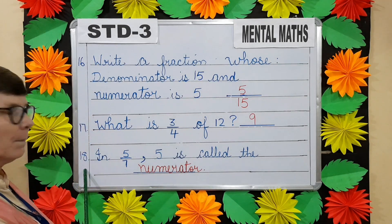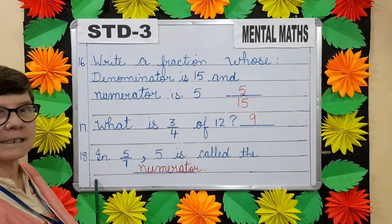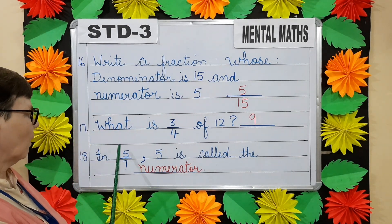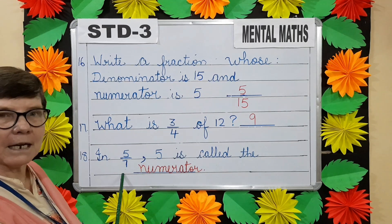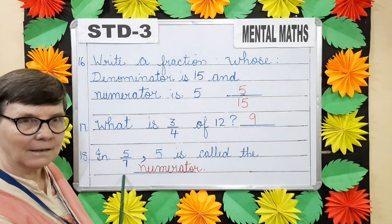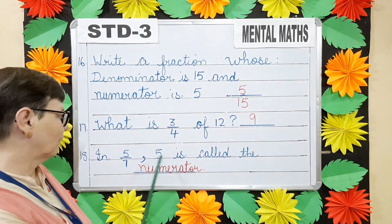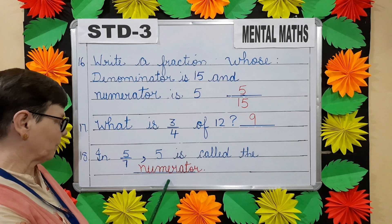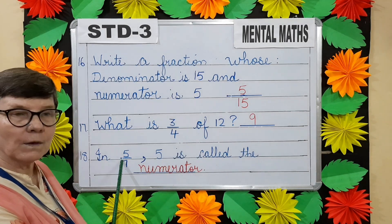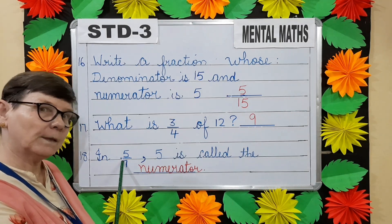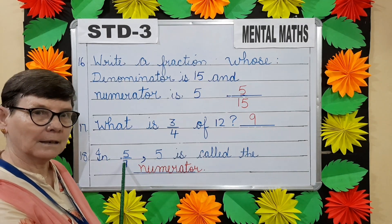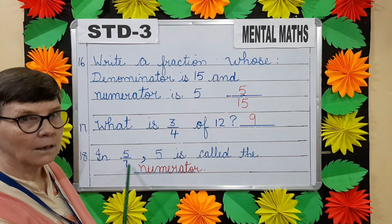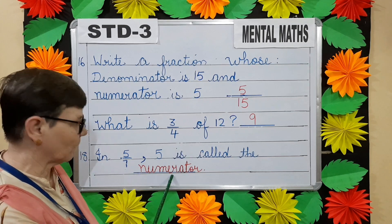Question number eighteen. In five by seven, five is called the dash. Now five is above the line, so it is the numerator.